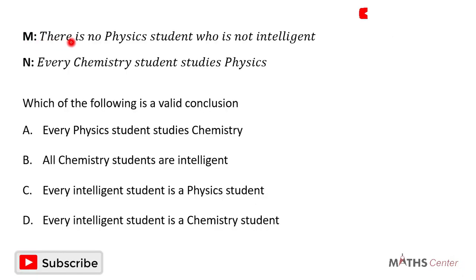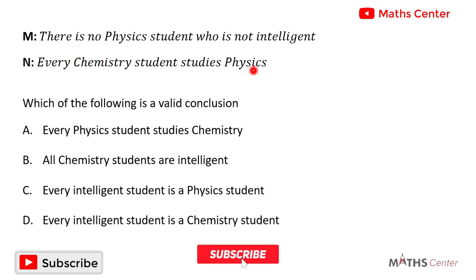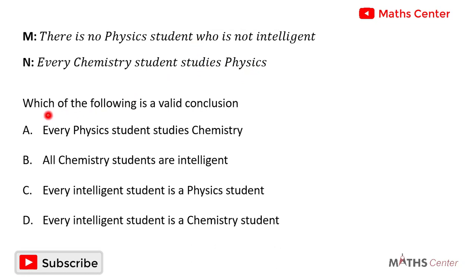Statement M is: there is no physics student who is not intelligent. Statement N is: every chemistry student studies physics. Using these two statements, which of the following is a valid conclusion? One of the four options is a valid conclusion based on these two statements, and the question wants us to select that option.